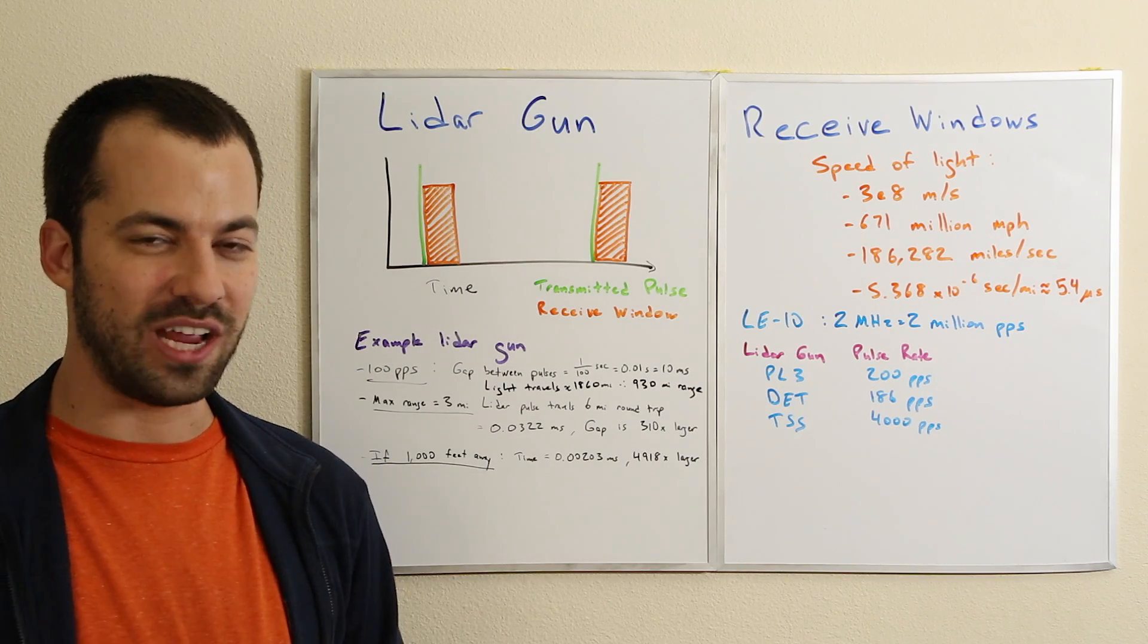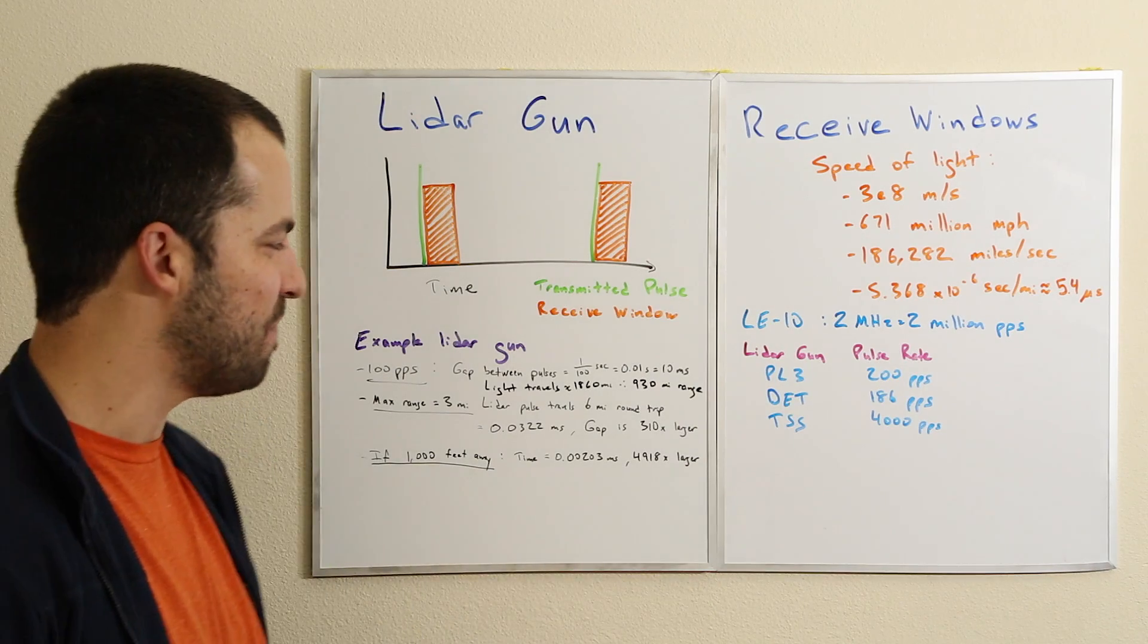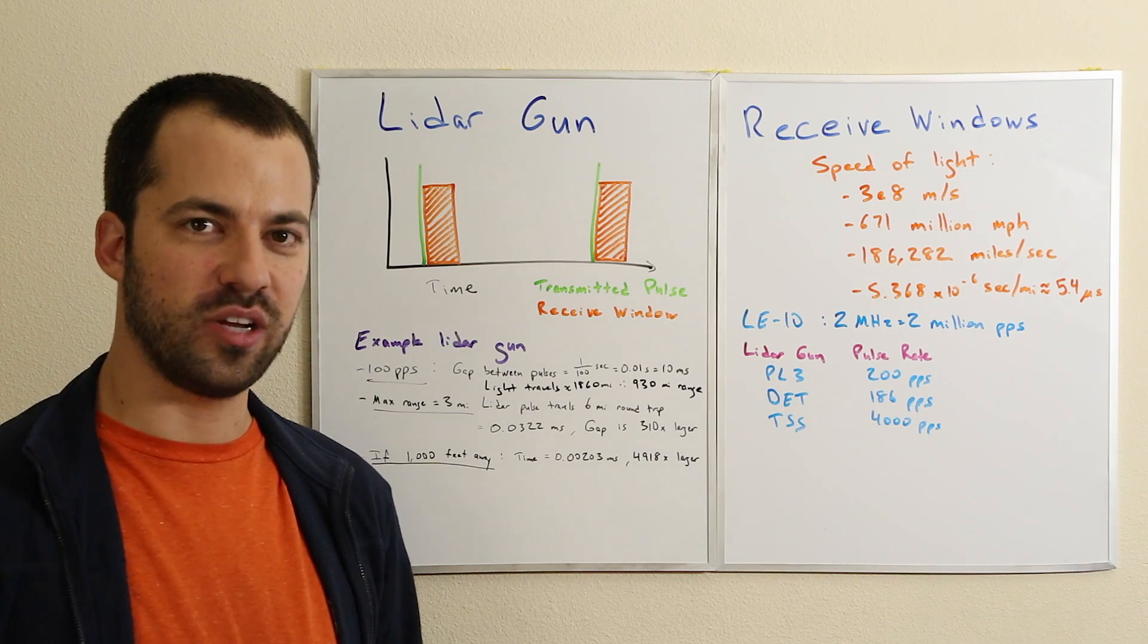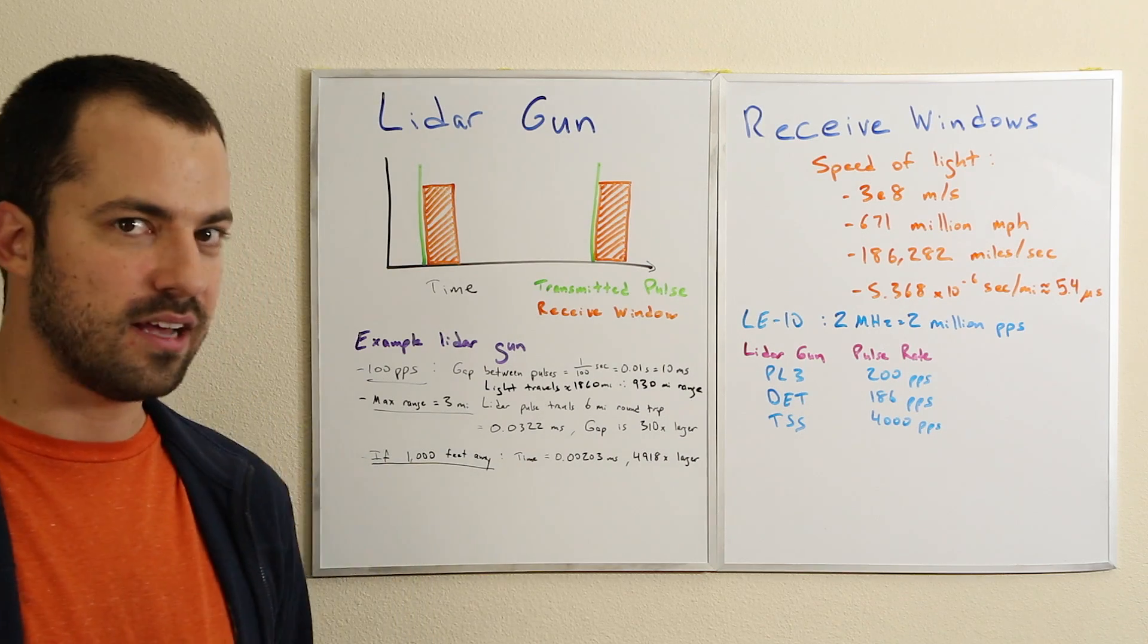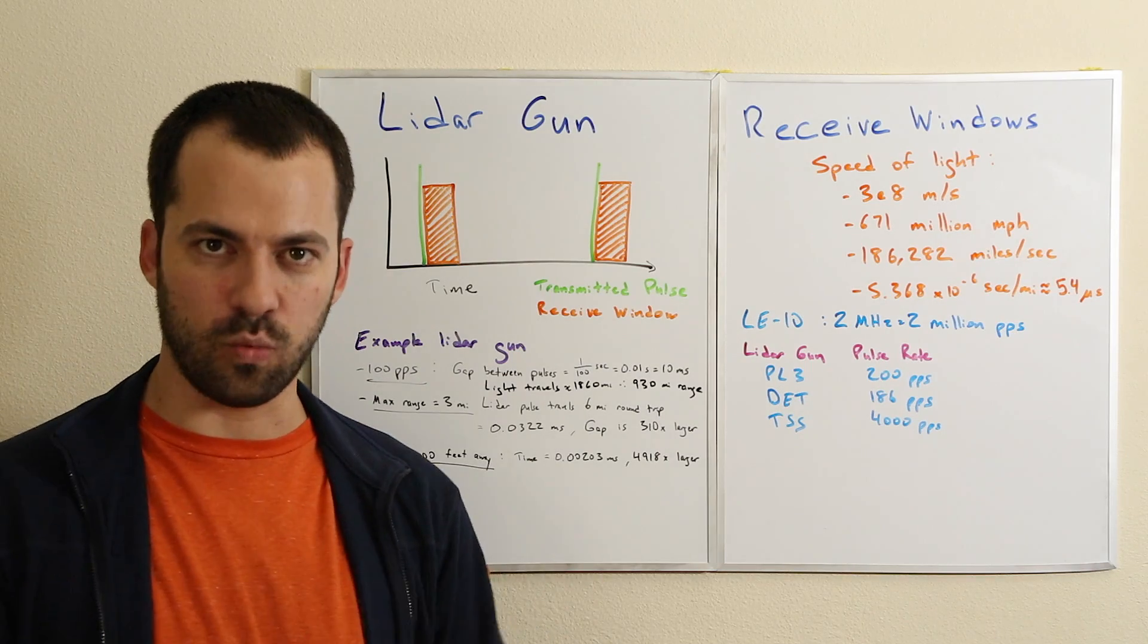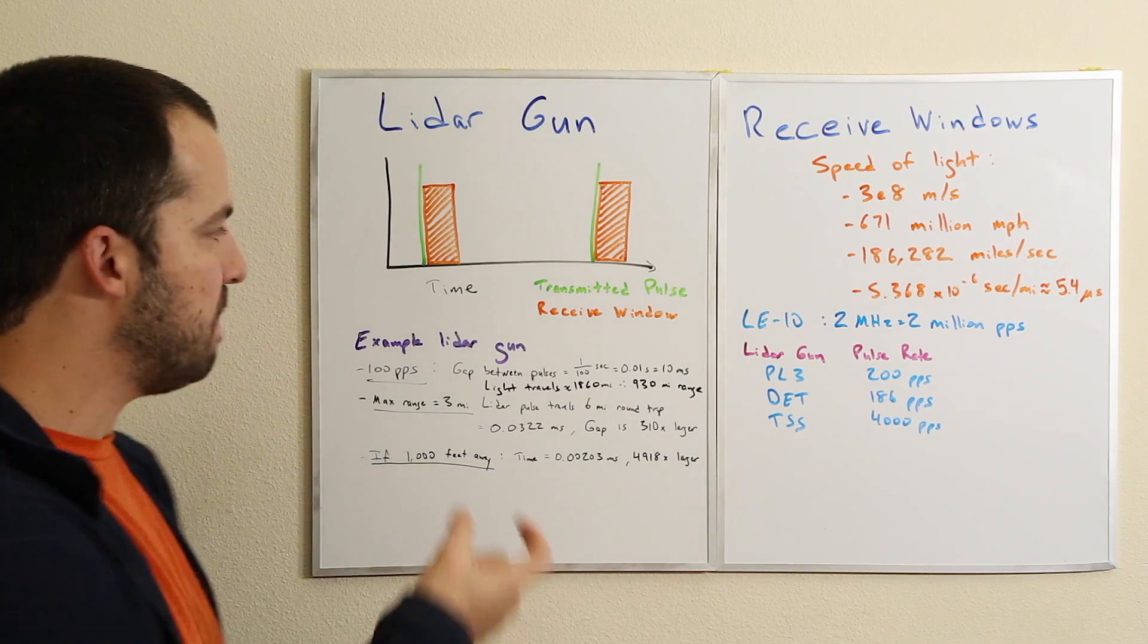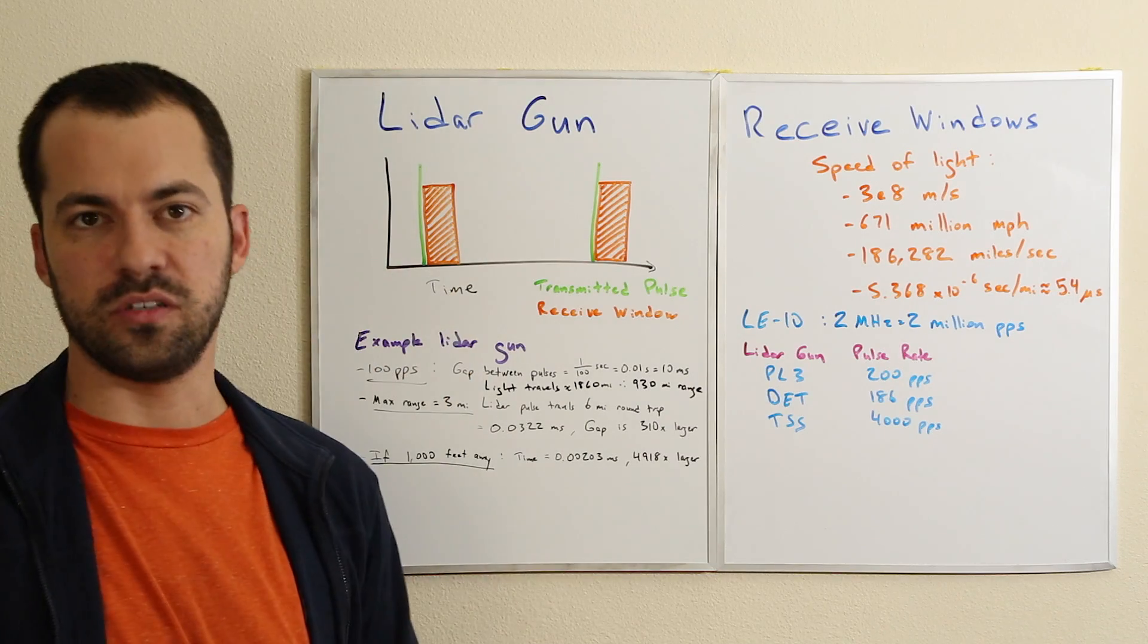930 miles is a ridiculously impractical range - you're never going to be giving a speeding ticket to somebody 930 miles away. What would be a practical distance? The longest shot I've seen was a couple years ago, somebody posted a screenshot from a laser Atlanta - it was like 11,000 feet, over two miles away. Even that's not realistic. Let's say it's three miles. Again, that's way farther than you'll ever see a shot in real life, but let's use this number for the maximum range where a lidar gun is open to receiving a pulse.